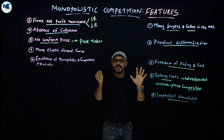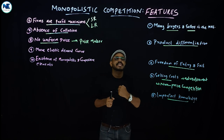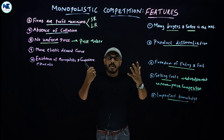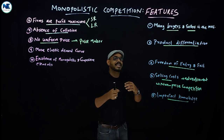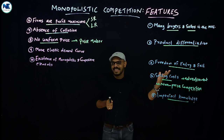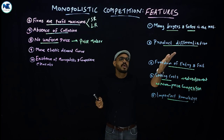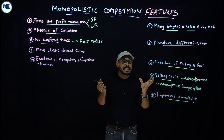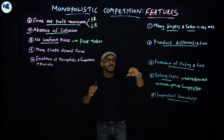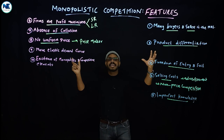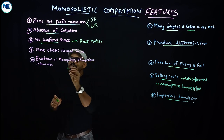For example, Coca-Cola can charge a certain price because of its brand. Even though close substitutes exist, customers may prefer it. Different products carry different prices because of product differentiation — quality, packaging, design, brand, and patents all contribute to this exclusivity.